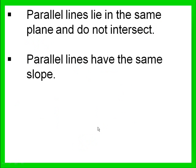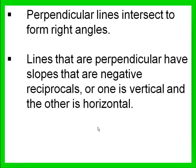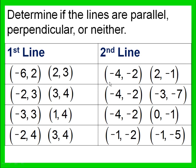So to recap what we've done: two lines are parallel if they have the same slope; two lines are perpendicular if they have slopes that are negative reciprocals, or if one line is vertical and the other is horizontal. Now you try these four problems and see what you can do.